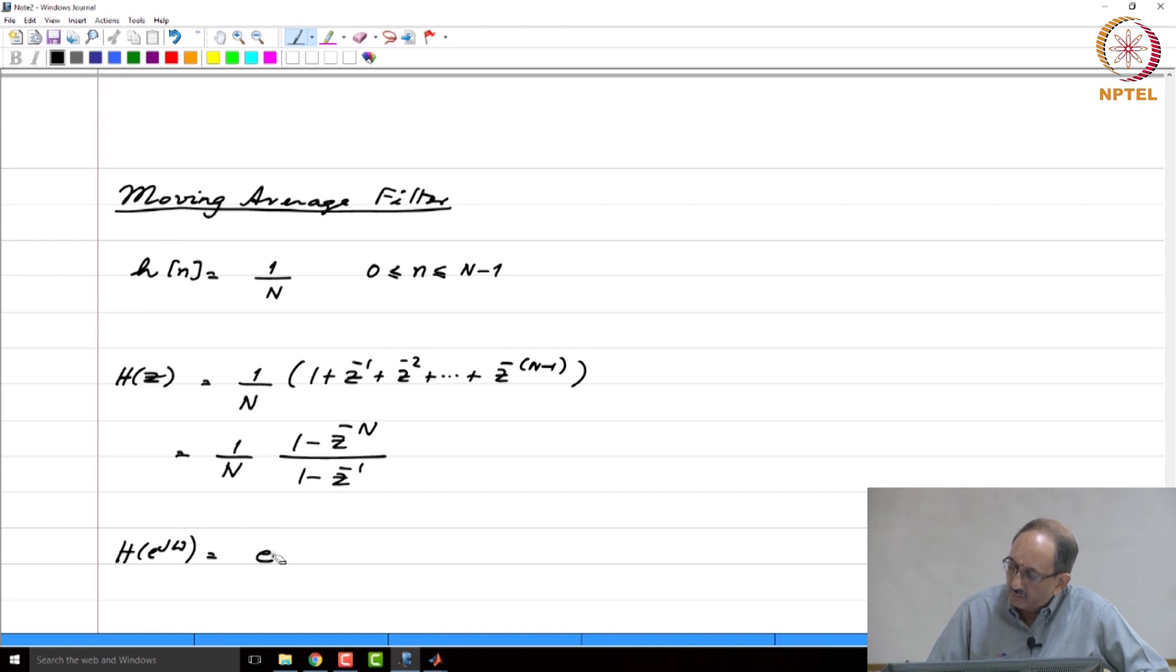And the frequency response is 1 over n. You can take e to the minus j omega n by 2 outside, and if you make this simplification, this will become n minus 1 by 2. The reason why you get n minus 1 by 2 is e to the j omega n by 2 will come from the numerator. Similarly, e to the j omega by 2 will come from the denominator. Therefore, when you simplify you will get this as the answer, and this will be sin n omega by 2 by sin omega by 2.